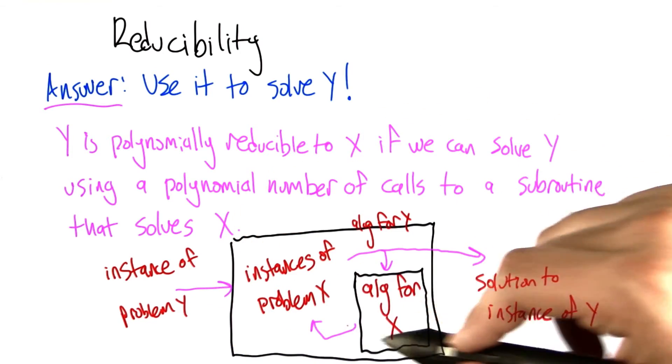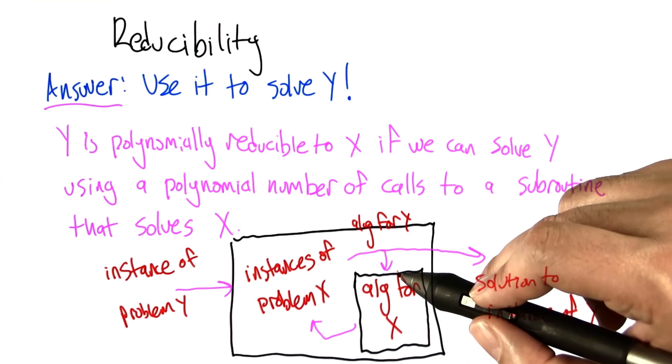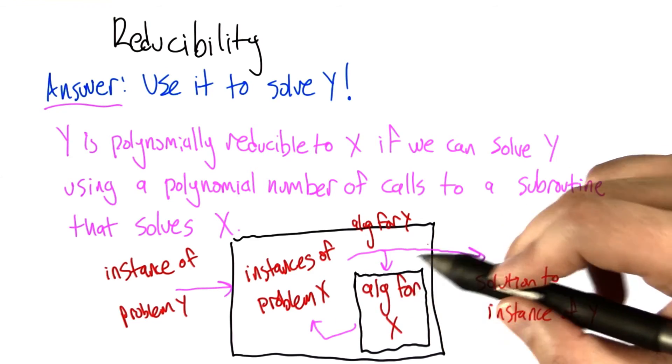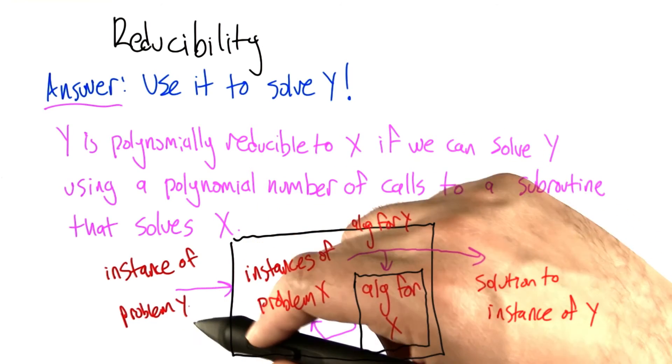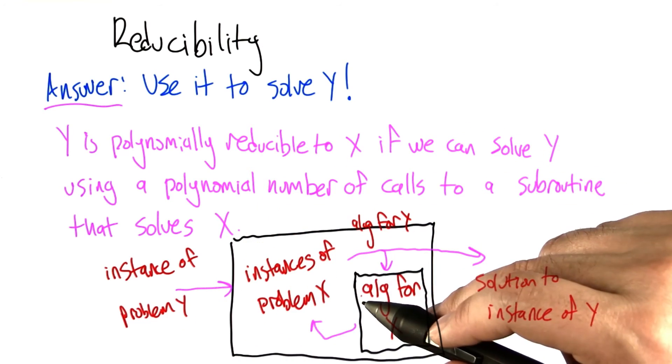So we basically have solved problem y by bringing to bear our solution to problem x. Or to say it another way, problem y has been reduced to problem x.